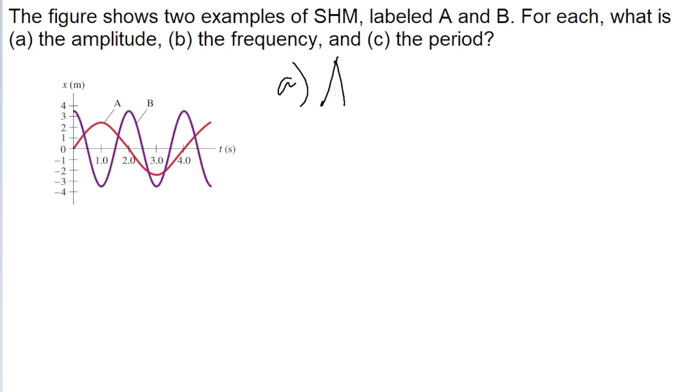With function A, for example, we'll call it A sub A for the amplitude of A. We can see that above the time axis, the function goes up to about 2.5 meters, and it also goes to about 2.5 meters below the x-axis. This function is centered at the t-axis and reaches a maximum distance of 2.5 meters, so that is the amplitude for A.